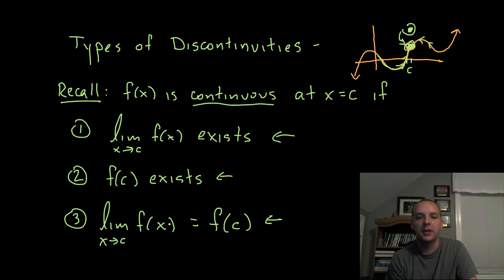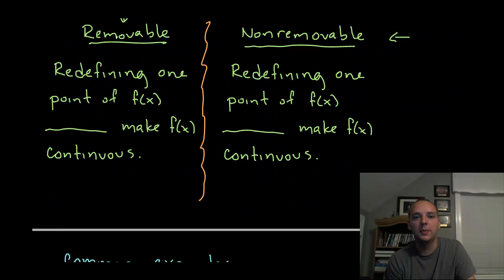Now what would happen if the first, the second, or the third criteria failed? Well that's what we're going to look at a little bit closer here. The first type of discontinuity is called a removable discontinuity. Redefining one point of f(x) will make f(x) continuous. So if you can redefine a single point, you can fix it and make it continuous. We call that type of discontinuity removable because you can remove the discontinuity by redefining a point hypothetically.